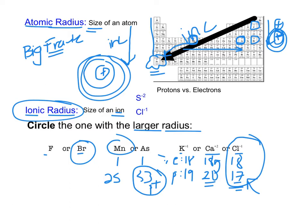Here we have sulfur and chlorine, also isoelectronic — they both have 18 electrons. We look at protons: sulfur has 16, chlorine has 17. If we're looking for the largest ion, that's going to be sulfur because it has the least pull on its electrons. Another way to look at it is that sulfur gained two electrons, so it's probably going to be the larger atom when you gain something.